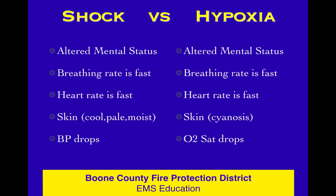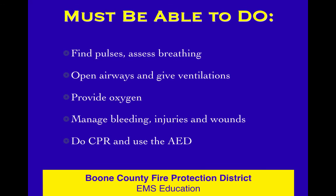Shock versus hypoxia side by side: altered mental status is the first sign for both, but it's subtle and can be confusing. Breathing rate is fast; heart rate is fast — up to this point, we just know there's a problem. Then shock patients get cool, pale, and clammy, while hypoxic patients get cyanotic very late. We can measure it with a blood pressure cuff for shock, and a pulse oximeter for O2 saturation — it's 'sat,' not 'stat' — for hypoxia.